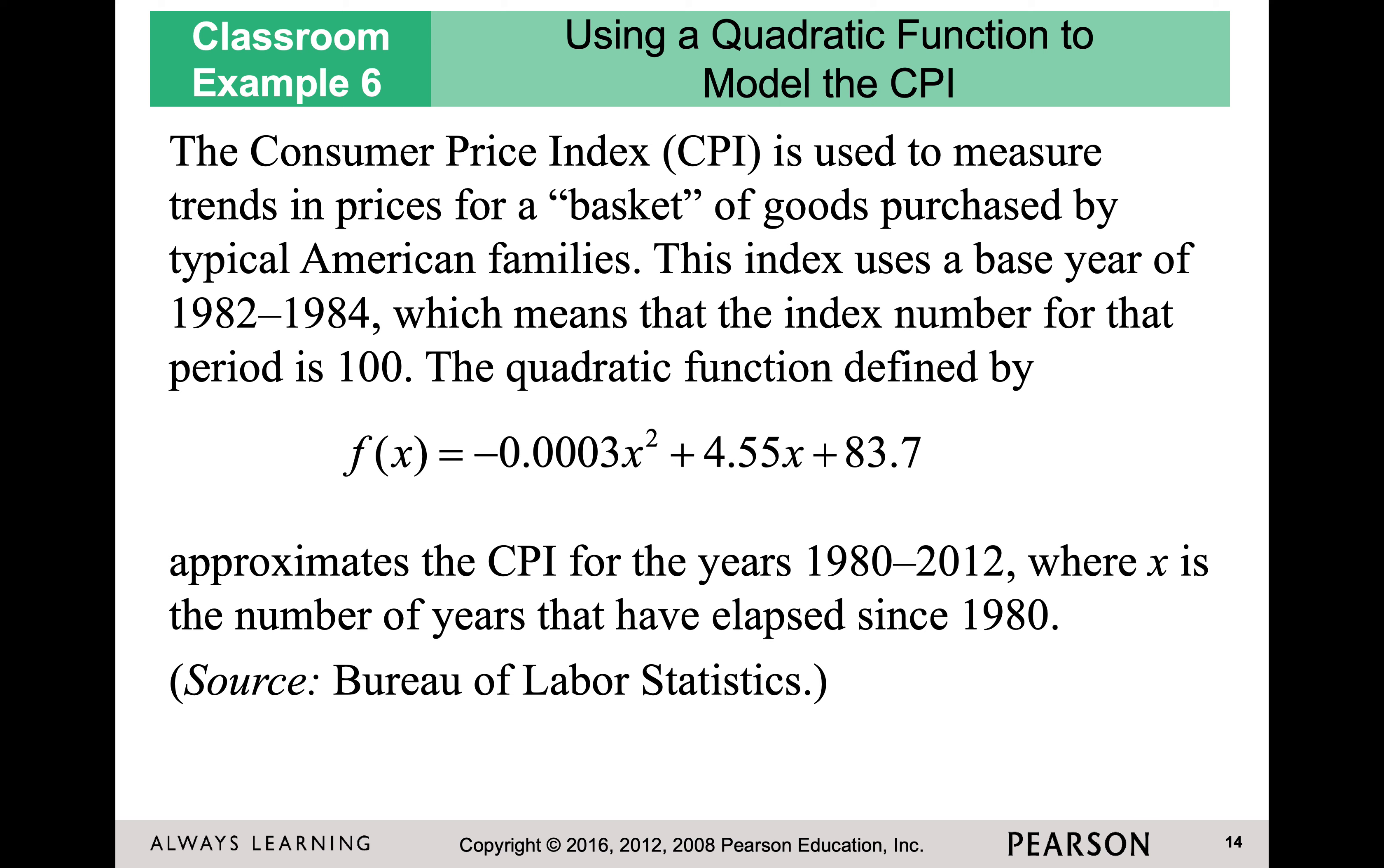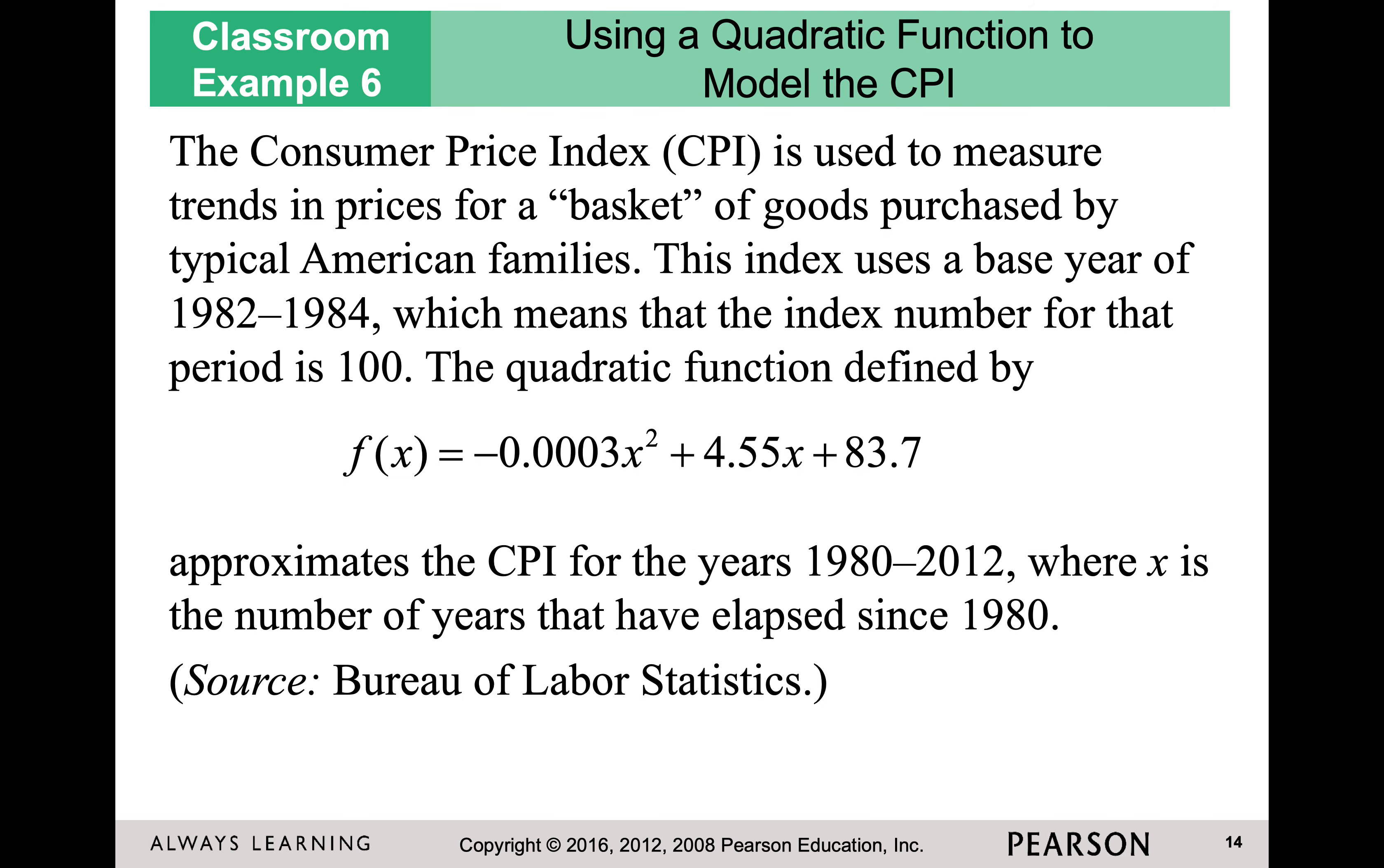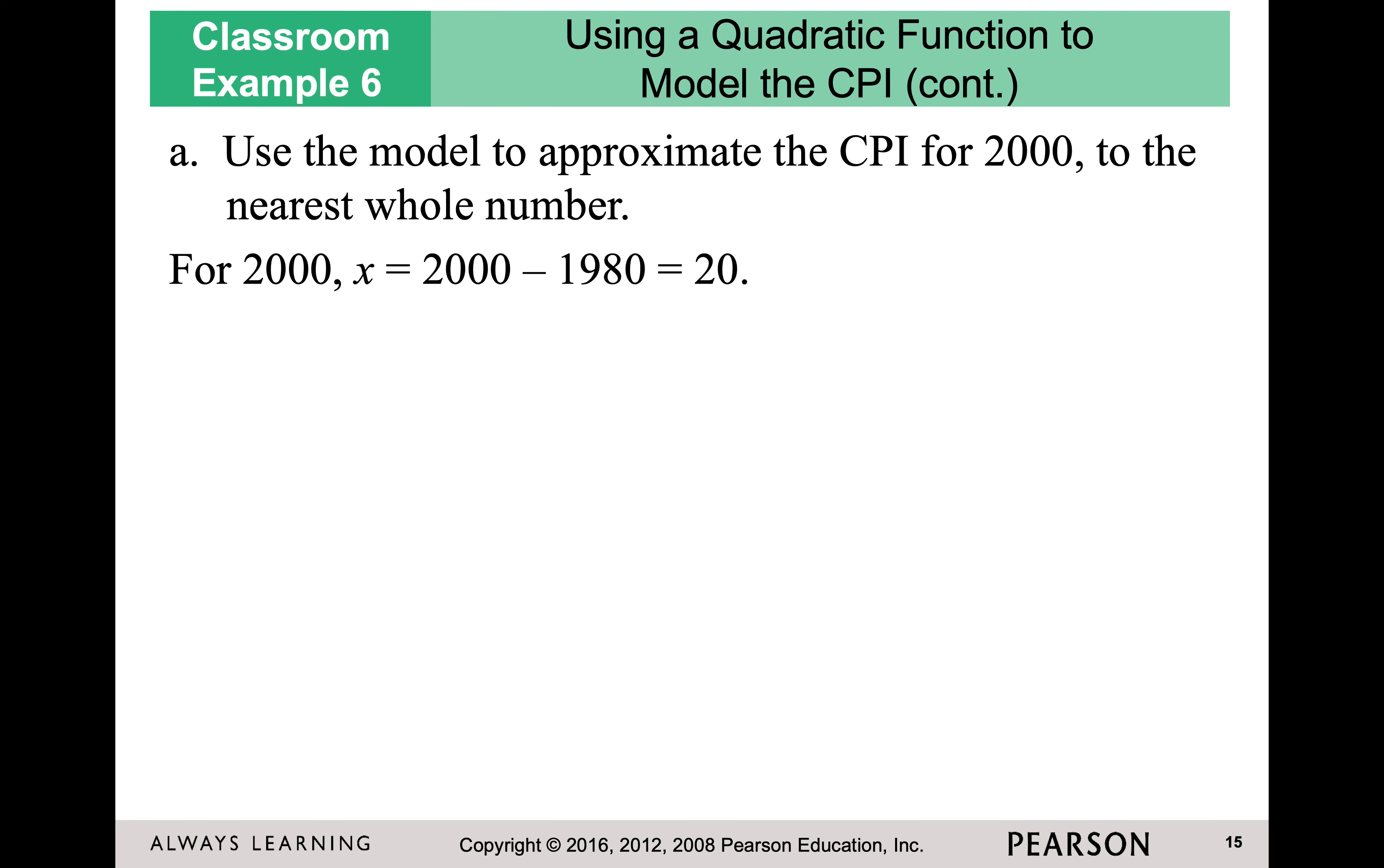And as I was talking about, this is another common use of quadratics. It's actually in economics. So I have this quadratic equation, and it approximates the CPI. And I want to take that approximation, and I want to approximate it for 2000. So then I'm going to plug in x equals 2000 minus 1980, that comes from the previous slide, which is 20 years. So I'm going to take that x value, and I'm going to plug in 20 years to figure out what the value would be. And it's roughly 175.